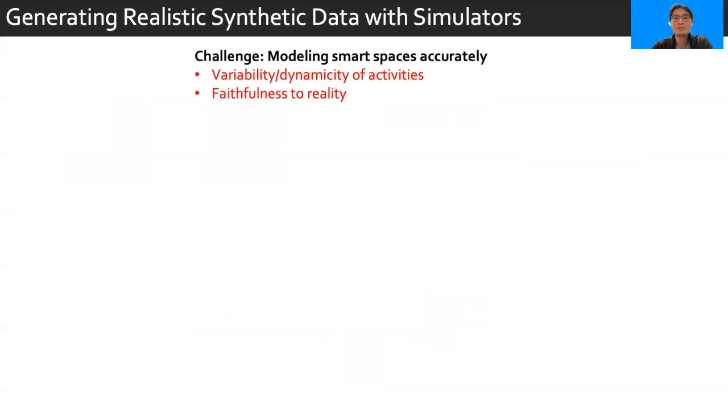To address these problems, offline modeling and simulation techniques are often used to explore complex scenarios. However, this comes with its own set of challenges. First, semantics of corresponding smart space components must be properly modeled, which can be difficult due to factors such as the variability, dynamicity of people and their activities. In addition, modeling must be faithful to reality and obey semantic constraints of the smart space. From the perspective of a researcher, how can this be done?